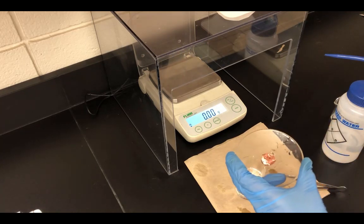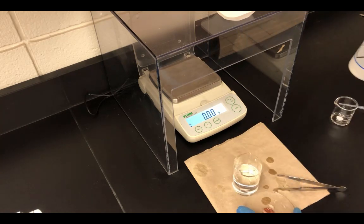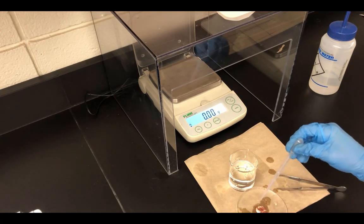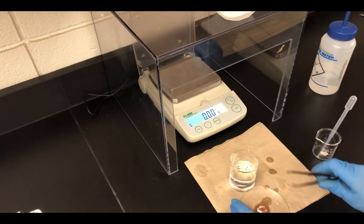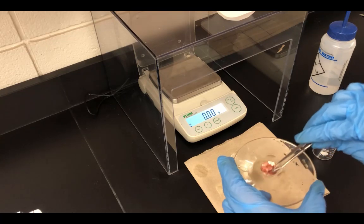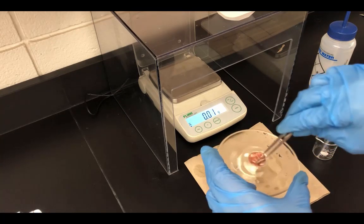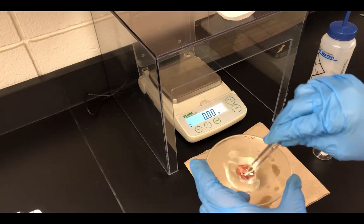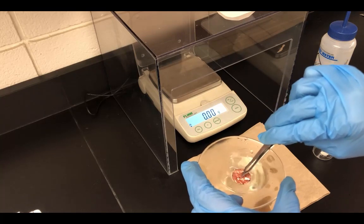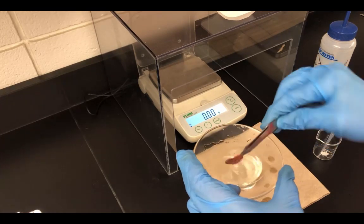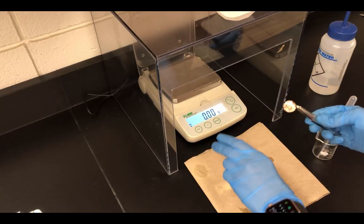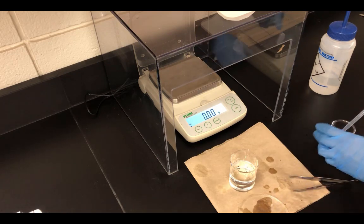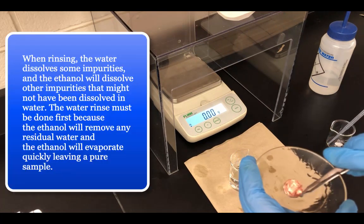The procedure says to rinse the penny with ethanol. I have a small amount of ethanol or ethyl alcohol. I'll rub it around in the ethanol, which evaporates very easily. As I'm rinsing and pressing down, bubbles come out. I want to make sure it's rinsed really well and any remnants of the HCl are out.